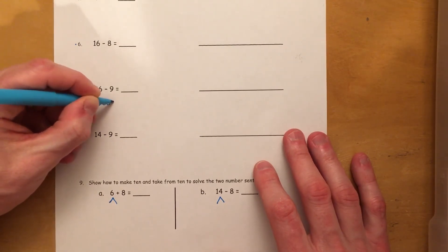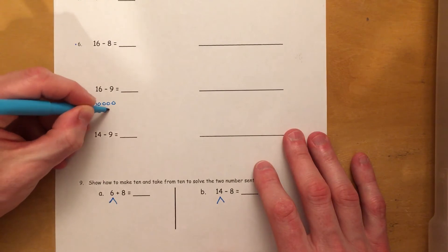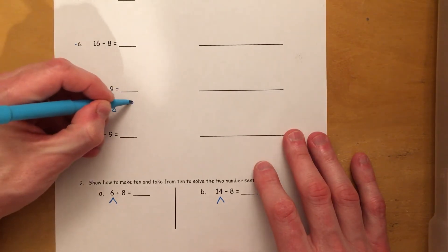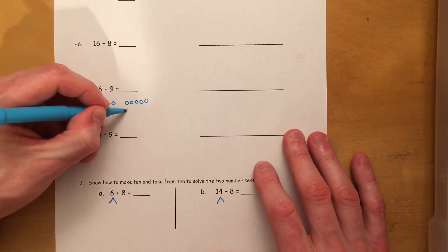So 1, 2, 3, 4, 5, 6, 7, 8, 9, 10. And then we need to draw our 6. 1, 2, 3, 4, 5, and 6.